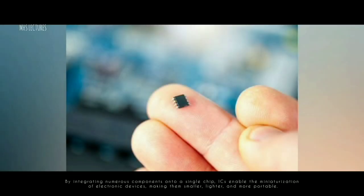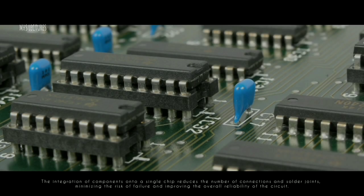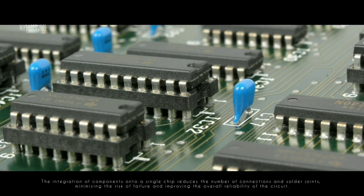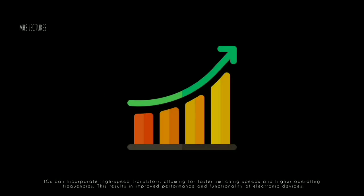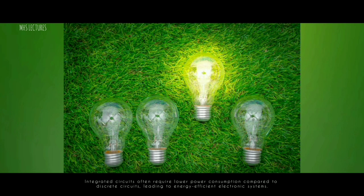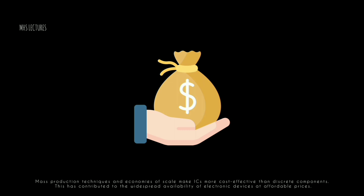Integrated circuits offer several advantages. 1. Miniaturization — by integrating numerous components onto a single chip, ICs enable the miniaturization of electronic devices, making them smaller, lighter, and more portable. 2. Increased reliability — the integration of components reduces the number of connections and solder joints, minimizing the risk of failure. 3. Improved performance — ICs can incorporate high-speed transistors, allowing for faster switching speeds and higher operating frequencies. 4. Lower power consumption — integrated circuits often require lower power consumption compared to discrete circuits, leading to energy-efficient electronic systems. 5. Cost-effectiveness — mass production techniques and economies of scale make ICs more cost-effective than discrete components.